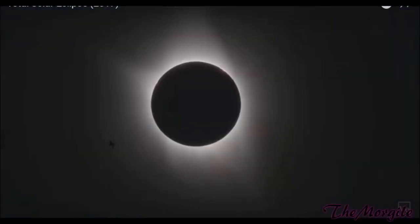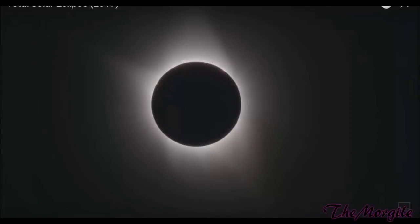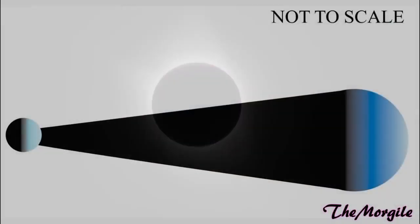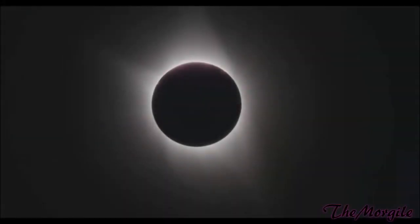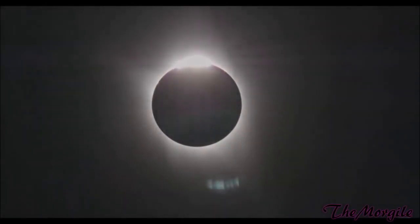Hello everyone, John the Morgal here checking in for section 3 of Flat Earth, Short and Sweet. In the previous section, we looked at a couple of problems with solar eclipses, namely the diameter of the moon's shadow being way too small for the alleged 2,000 mile diameter of the moon according to the Ball Earth theory. In this section, we're going to expand on that point and show further discrepancies between measurable reality and the Ball Earth theory.